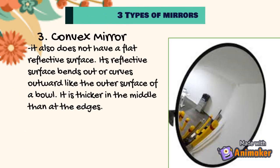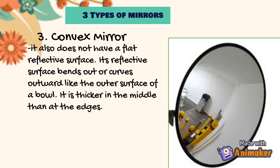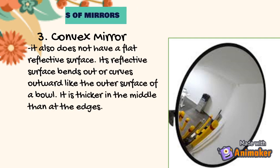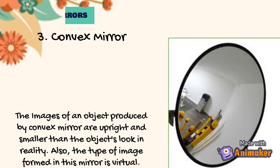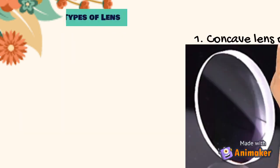The third one is the convex mirror. It also does not have a flat reflective surface. Its reflective surface bends outward like the outer surface of a bowl. It is thicker in the middle than at the edges. The images produced by a convex mirror are upright and smaller than the object's actual size, and the type of image formed is virtual.